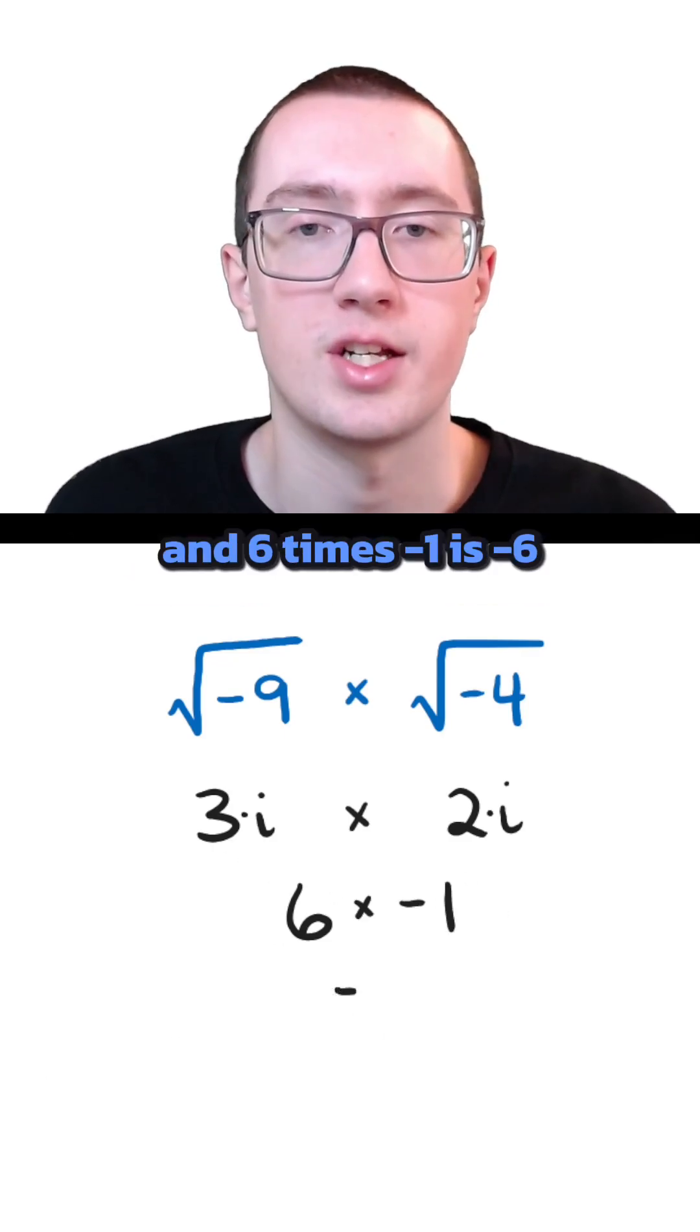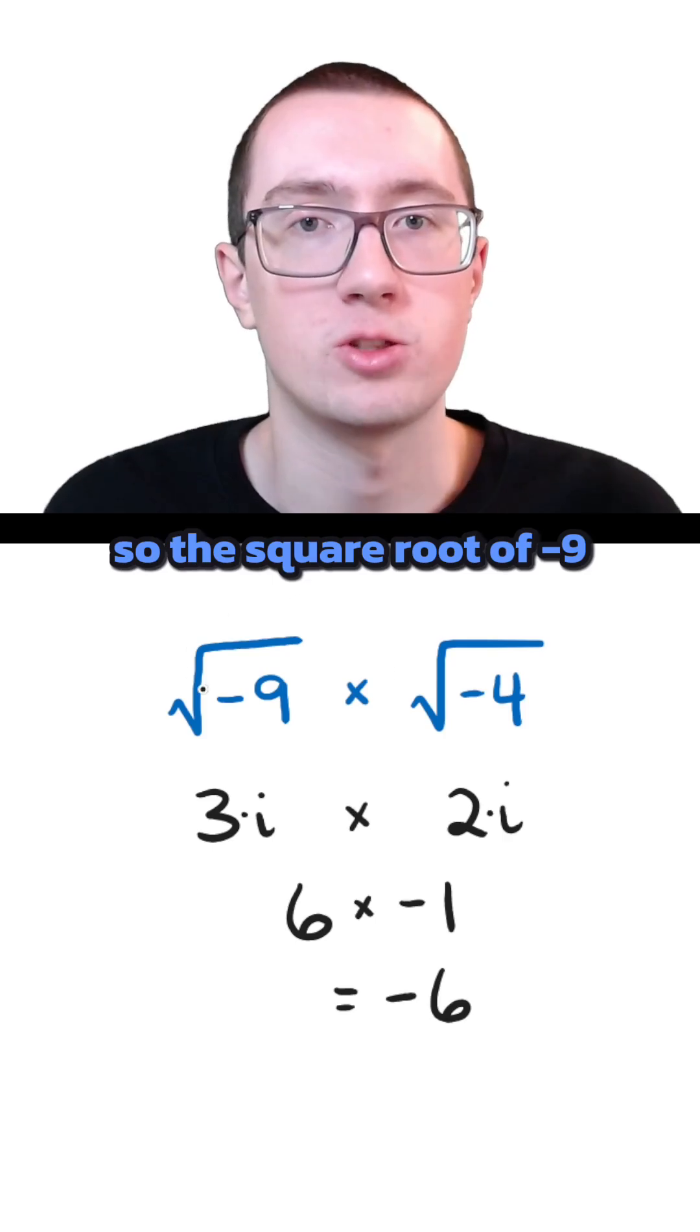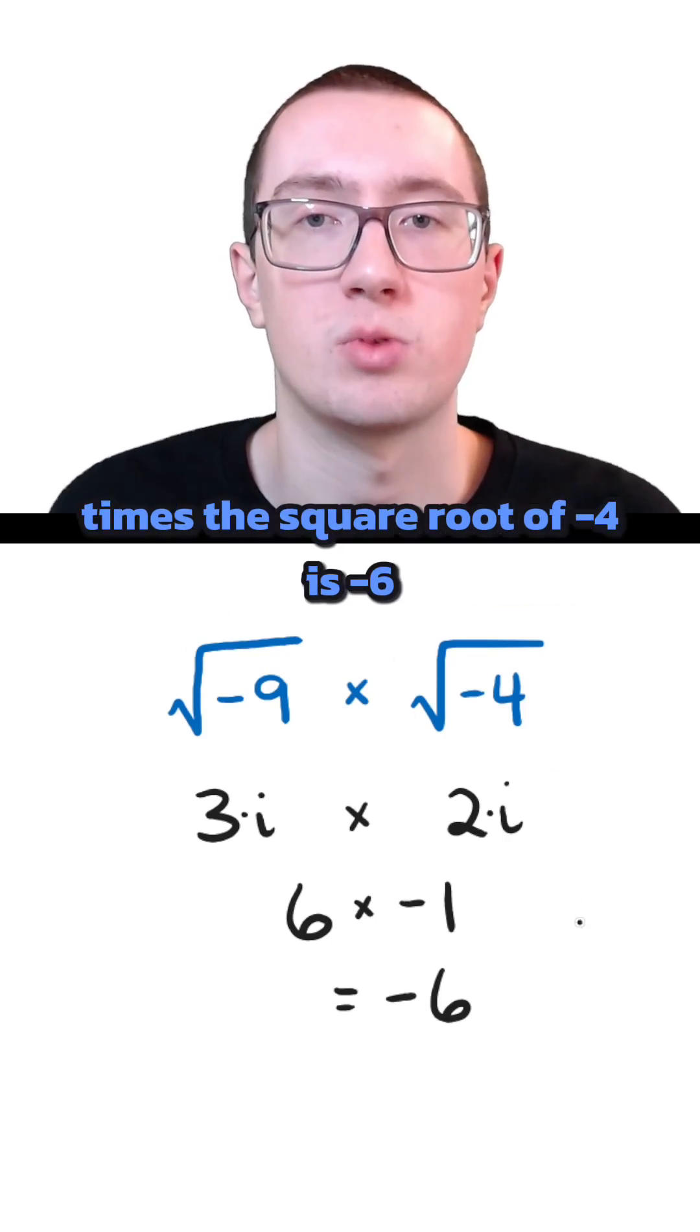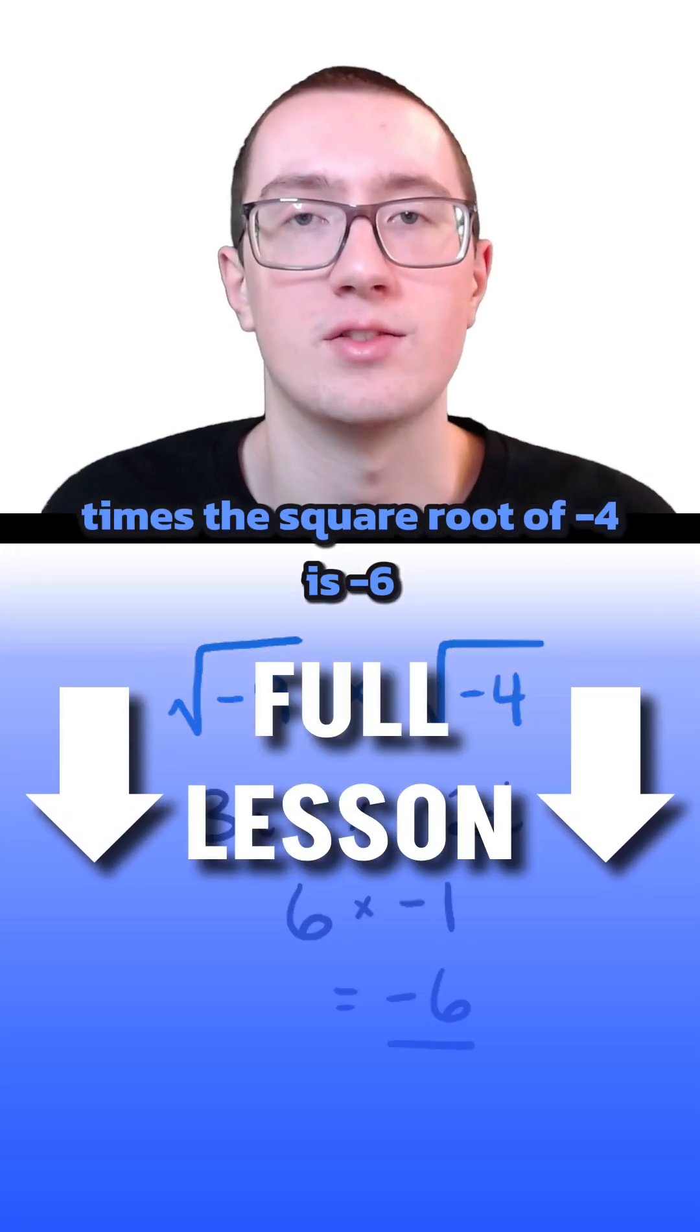And 6 times negative 1 is negative 6. So the square root of negative 9 times the square root of negative 4 is negative 6.